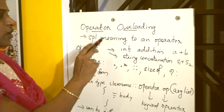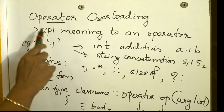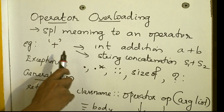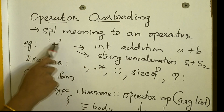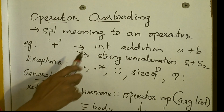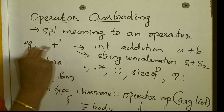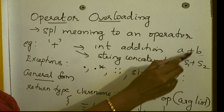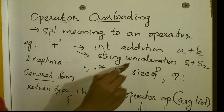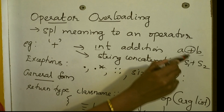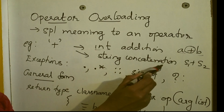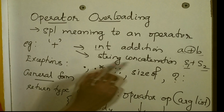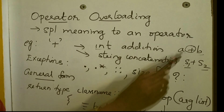So what is operator overloading? The definition is: operator overloading gives special meaning to an operator. For example, the plus operator is used to add two numbers. It is a binary operator which accepts two operands, say A and B, and if we write A plus B, it performs integer addition. The same operator plus can be overloaded to perform string concatenation if the operands are strings — S1 and S2 here denote strings. This is an example of operator overloading.